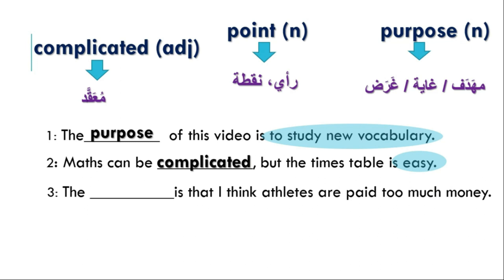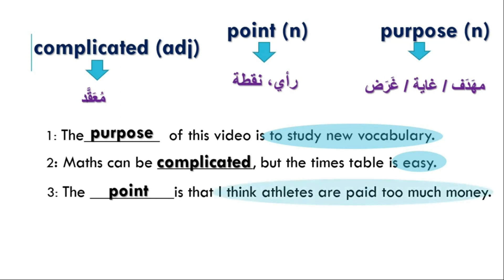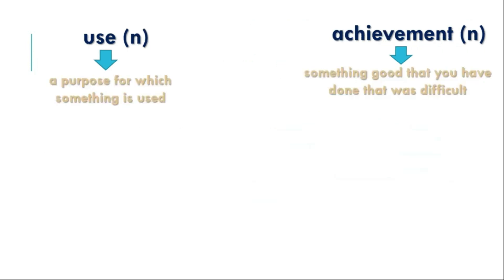Number three: the ___ is that I think athletes are paid too much money. This is an opinion — 'I think' is the key clue here. So the answer is point. The point is that I think athletes are paid too much money. 'I think athletes are paid too much money' was key in helping us understand the word required, which is point.